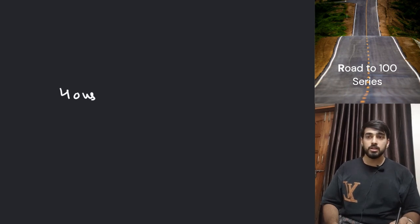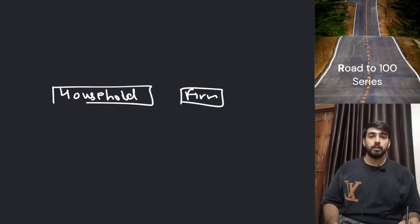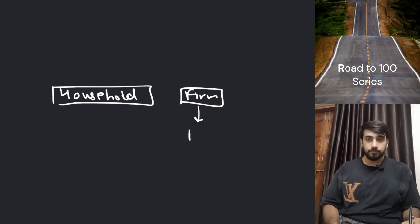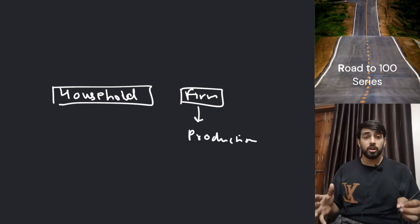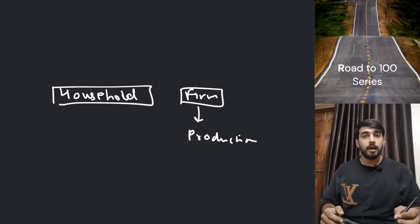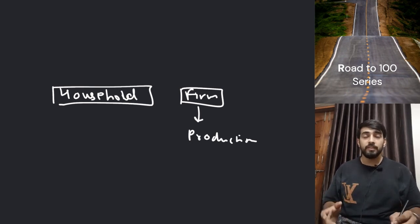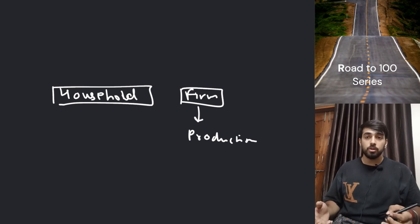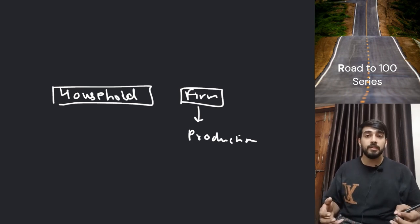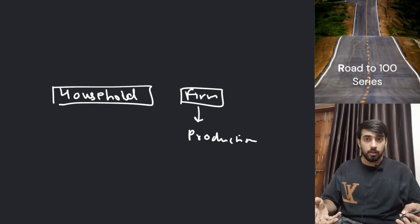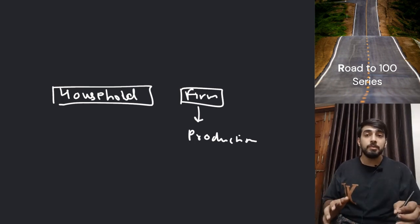So we learned there are two sectors: household and firm. Basically the work of the firm is to produce something — firm production karta hai. If the firm does production, then it will require some services for that production. Production needs certain things: it needs land. Now it is not necessary that every firm has its own land, so it takes land on rent. It also needs investment, which we call capital, and it also needs someone to manage the business.